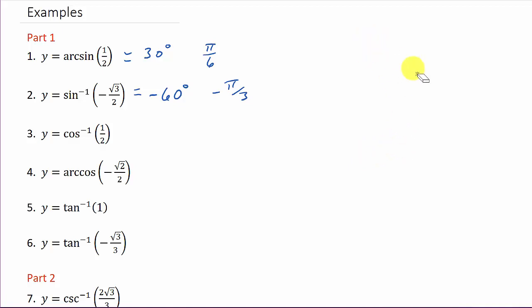Now let's look at inverse cosine of 1/2. You've got to memorize the special angles again. The cosine of what equals 1/2? That's 60 degrees. So the inverse cosine of 1/2 is 60 degrees, or in radians that would be π/3.